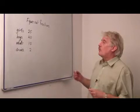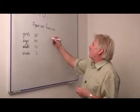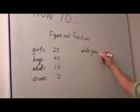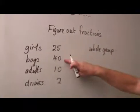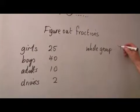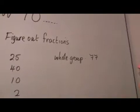So, to work out a fraction of the whole group, how many are in the whole group? Well, the whole group is twenty-five plus forty, sixty-five, plus ten, seventy-five. It's seventy-seven. The whole group is seventy-seven people.